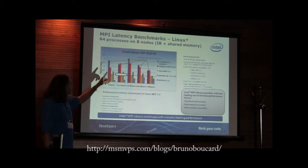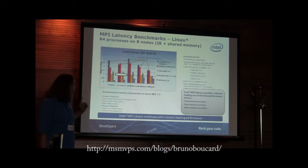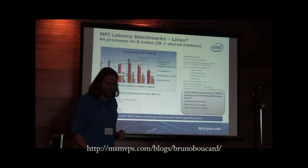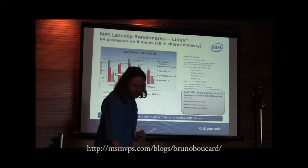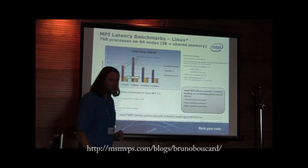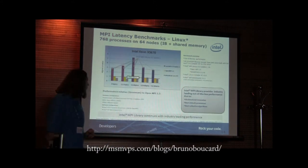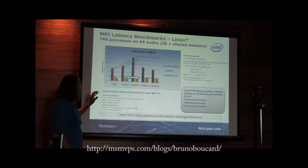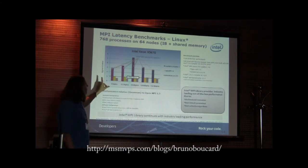This is on a dual-socket system with four cores each, and this is how it looks on a system with six cores each — kind of the same picture. Intel MPI is doing pretty well.